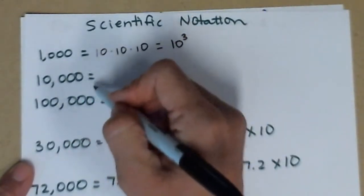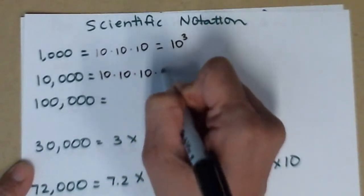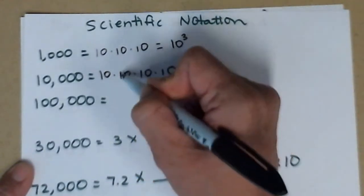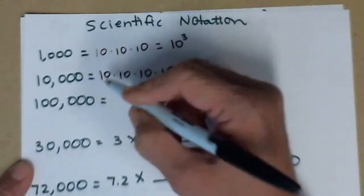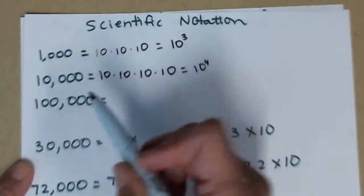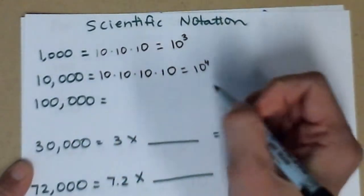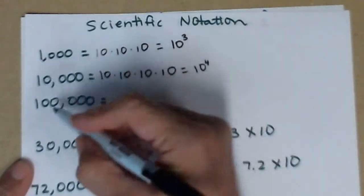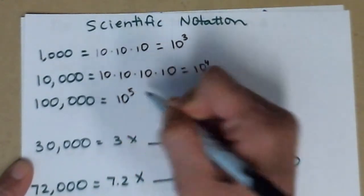So the next one is 10,000. So that's 10 times 10 times 10 times 10, or 1,000 times another 10. This time we have four tens. And you might notice that there are four zeros over here. And so I know you've got the pattern. So 100,000 would be 10 to the fifth.